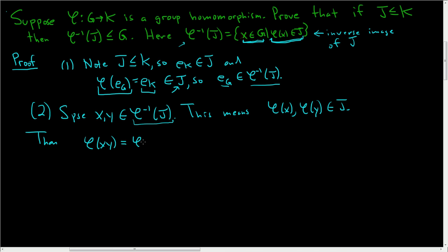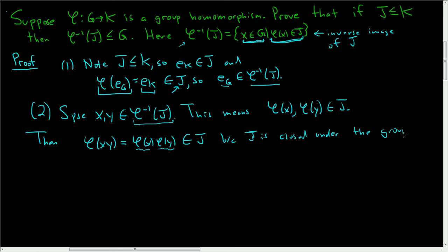Well, phi is a group homomorphism, so phi of xy equals phi of x times phi of y. And phi of x is in J and phi of y is in J, so their product is in J — because J is closed under the group operation, since it is a subgroup. Thus we showed that phi of xy is in J, which means that xy is in the inverse image. So that shows that the inverse image of J is closed under the group operation.